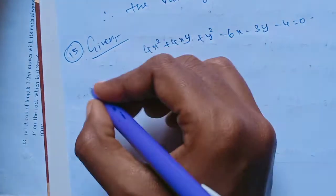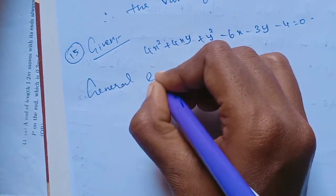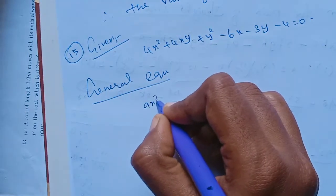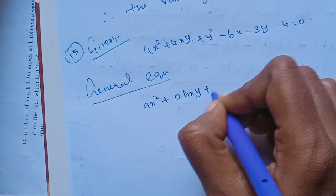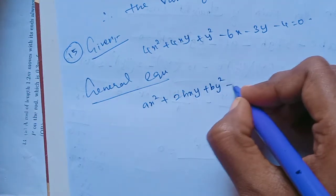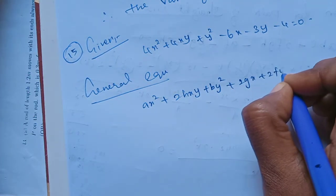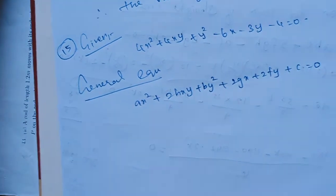We compare with the general second-degree equation: ax² + 2hxy + by² + 2gx + 2fy + c = 0. By comparing, we can extract the values of a, b, h, g, f, and c.